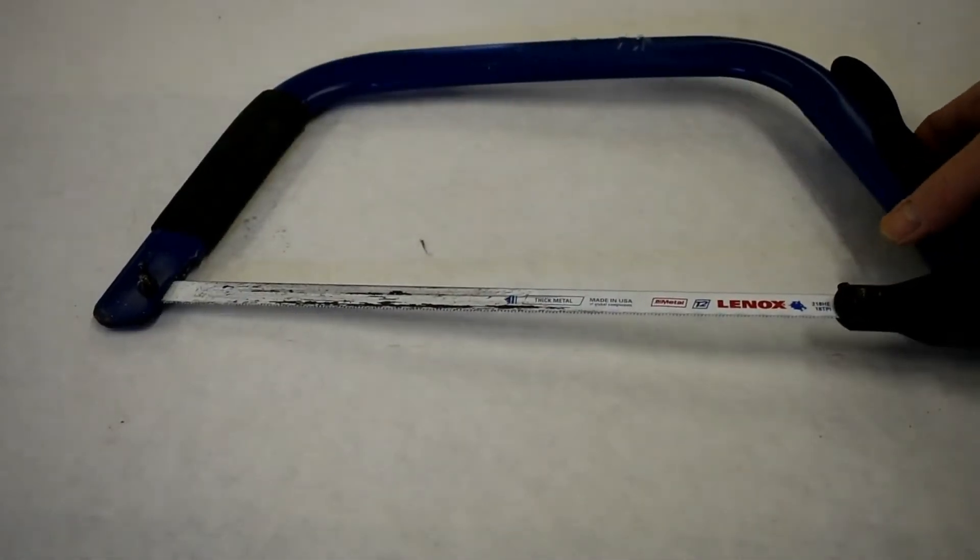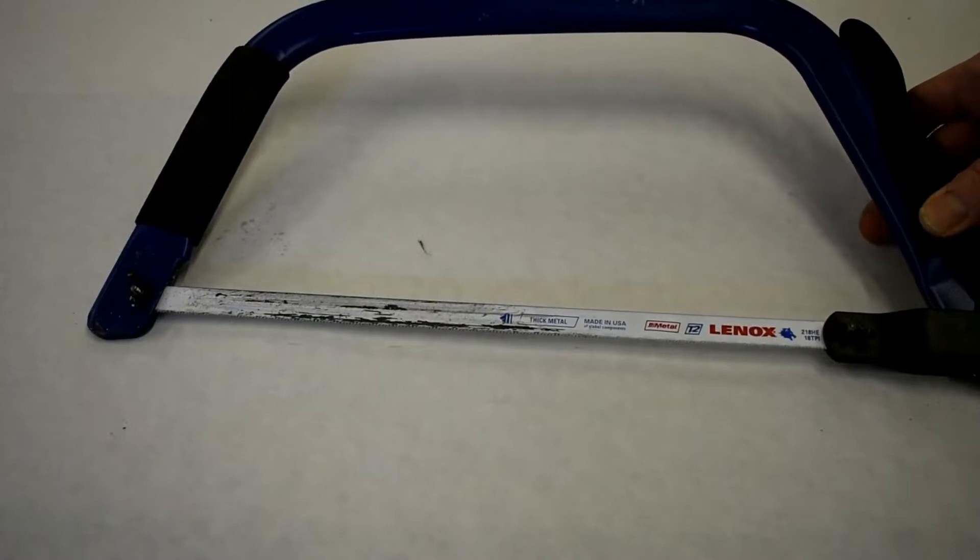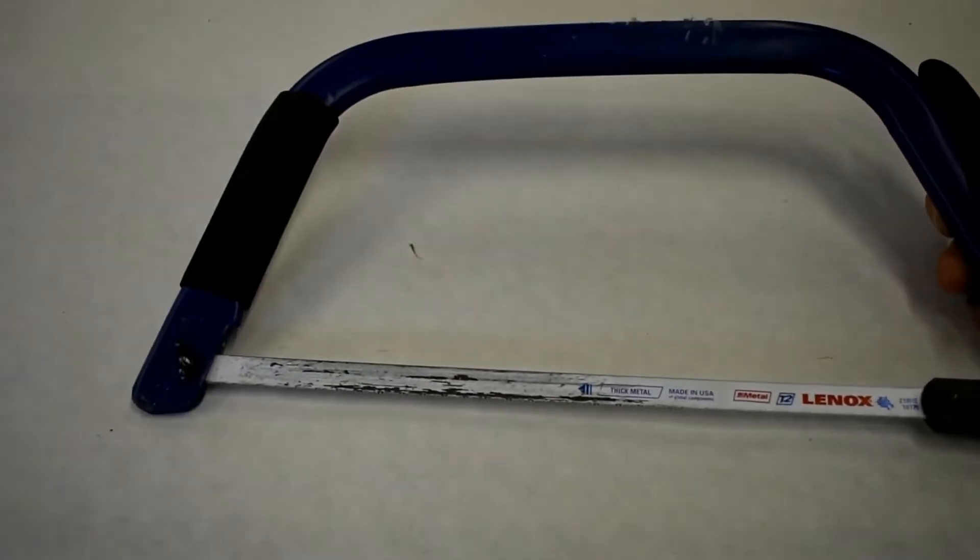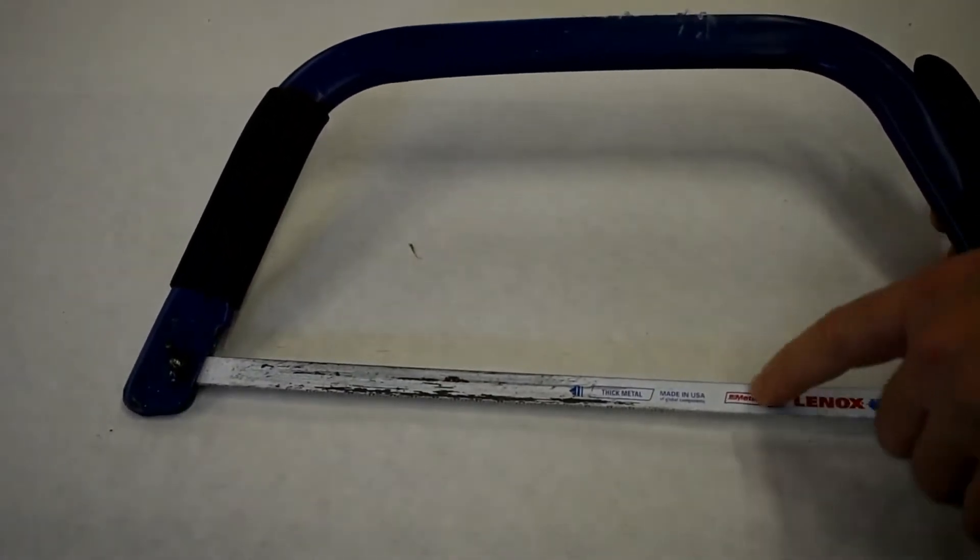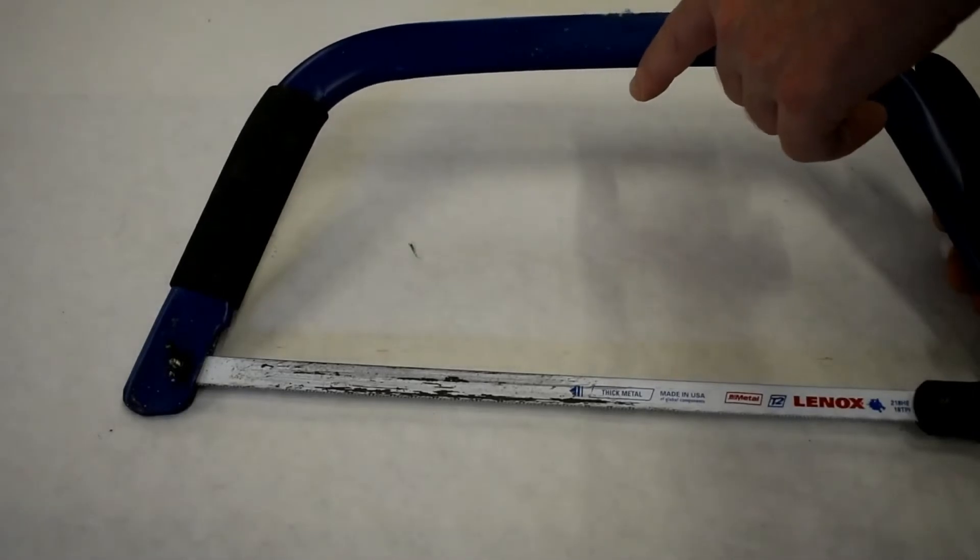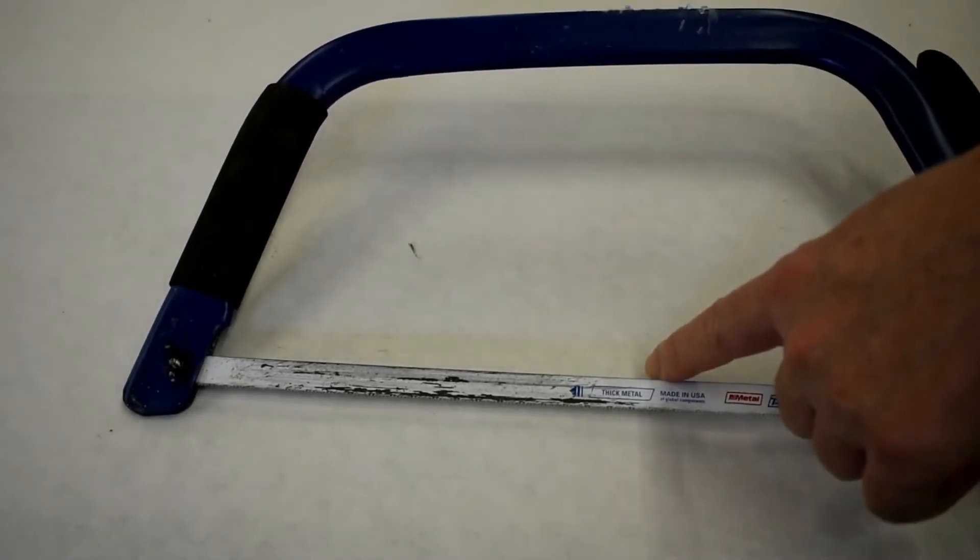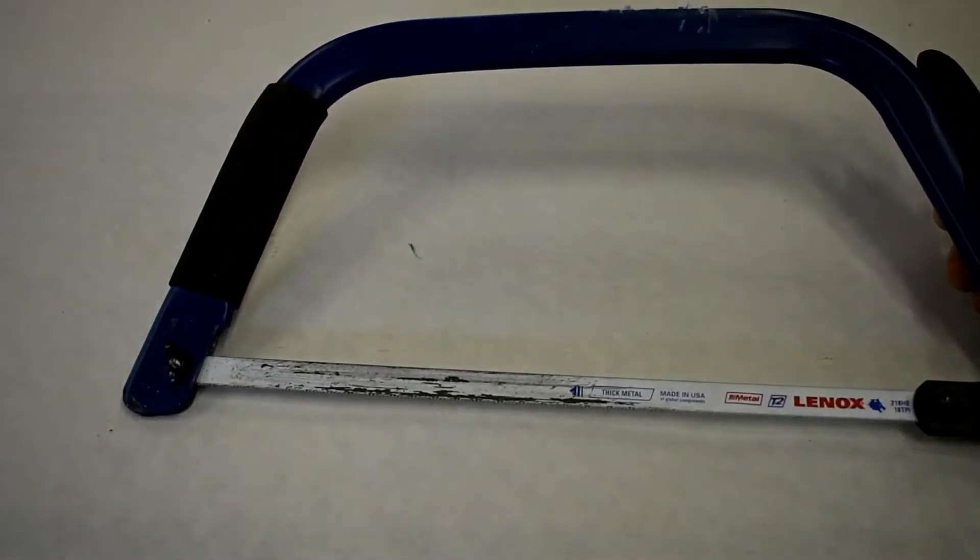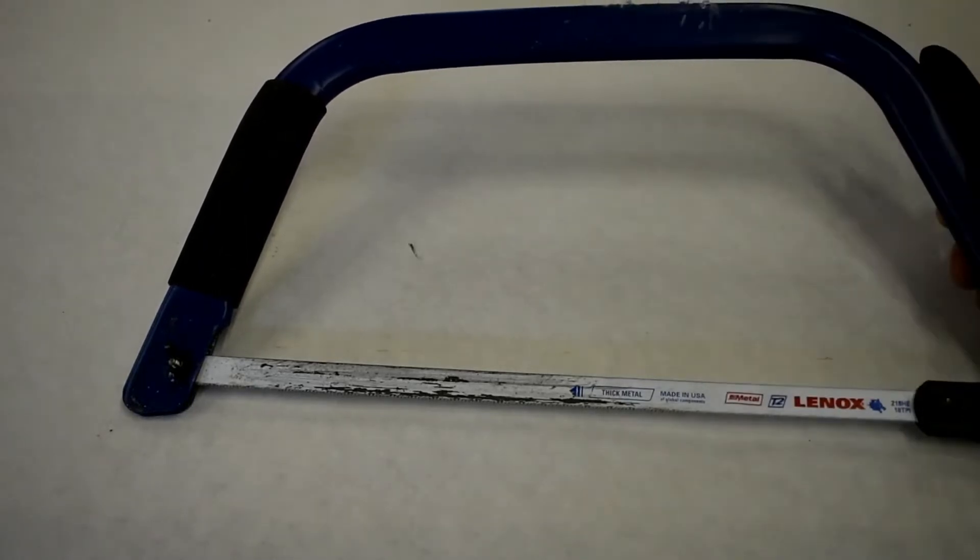No doubt everyone's familiar with the basic hacksaw for cutting metal. Of course, one of the limitations of the hacksaw is not too hard to see that you've only got a limited distance that you can cut into your metal before basically this bar gets in the way.